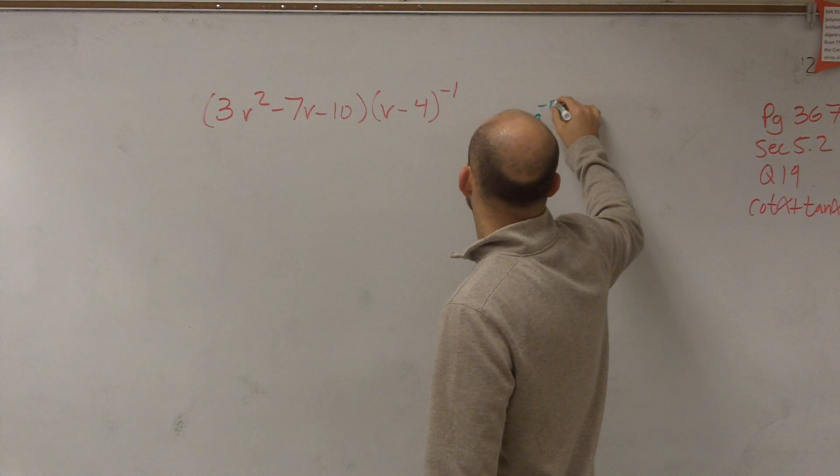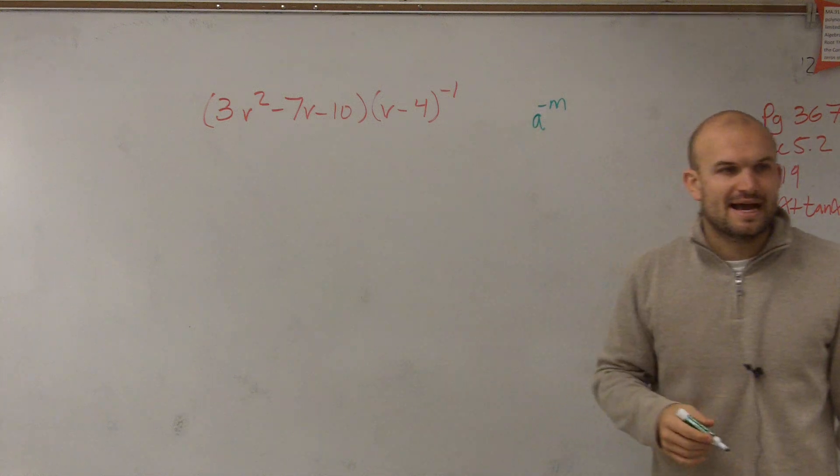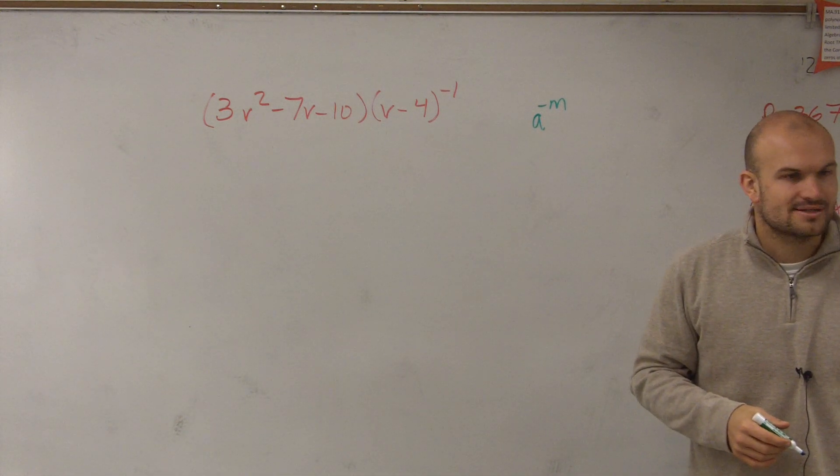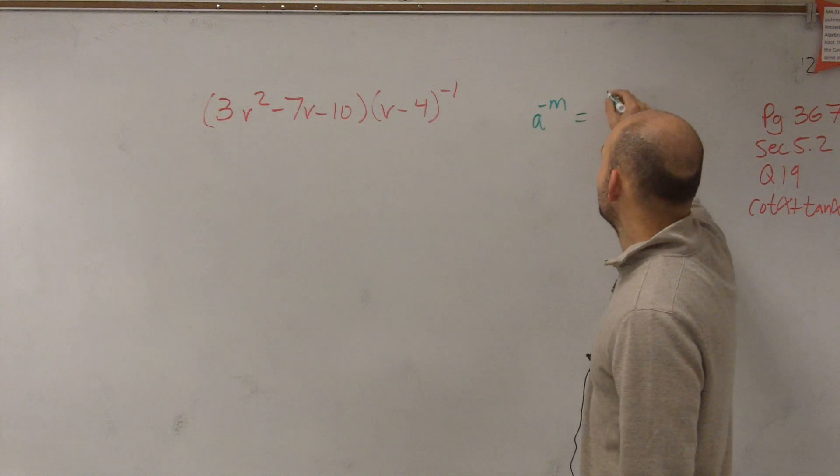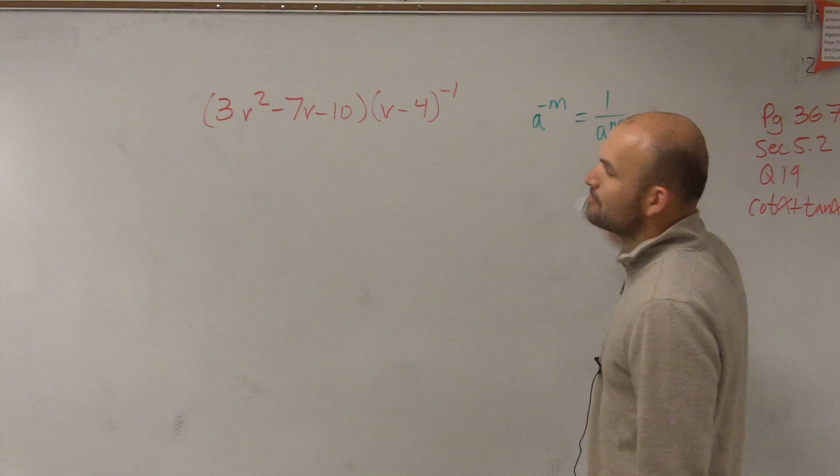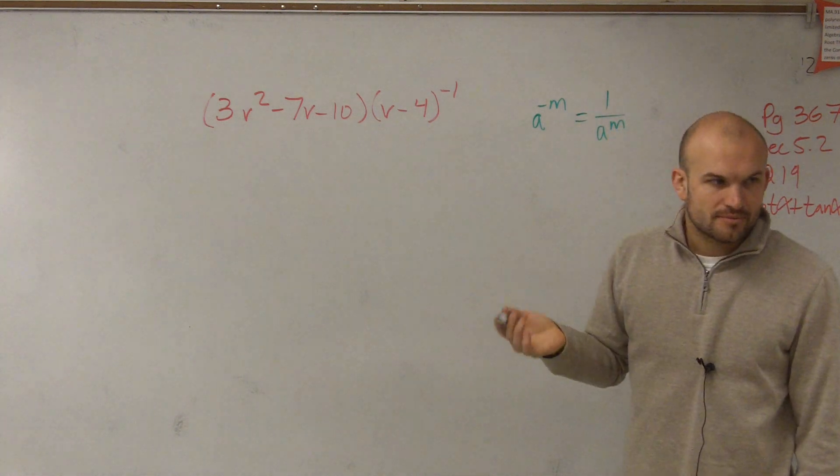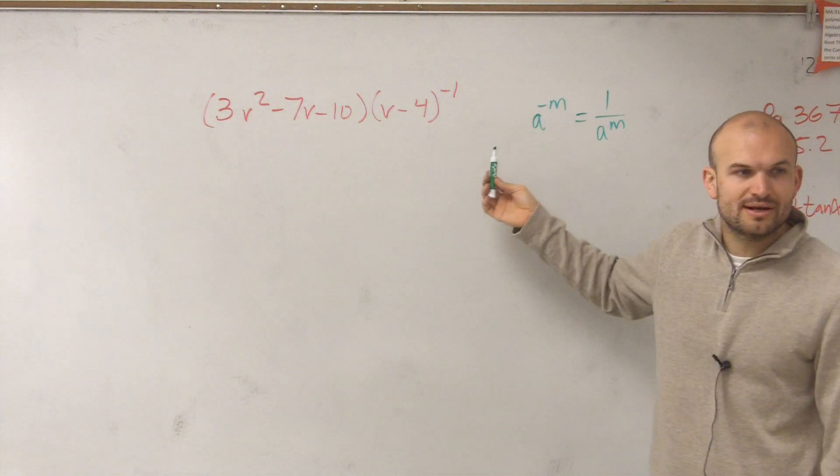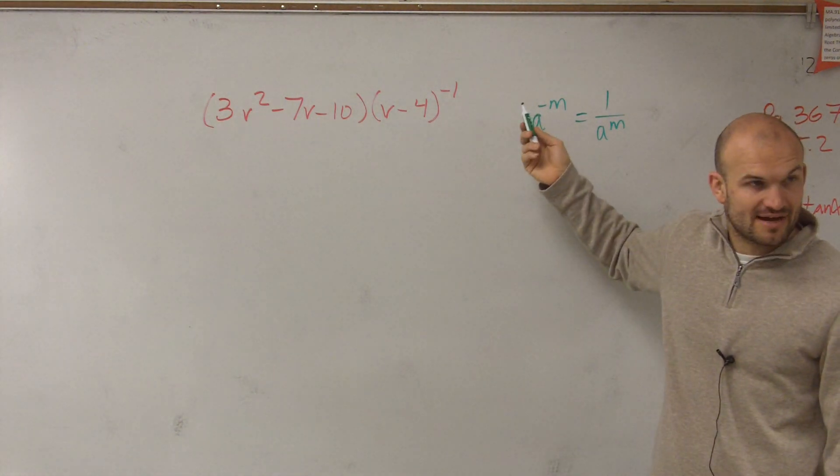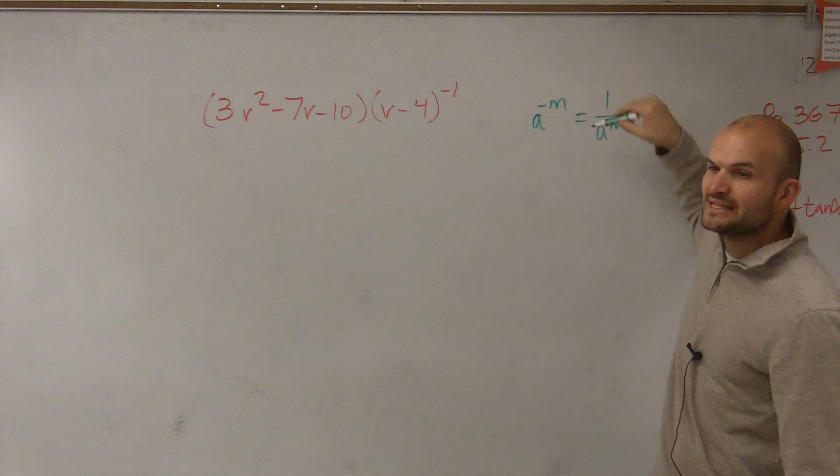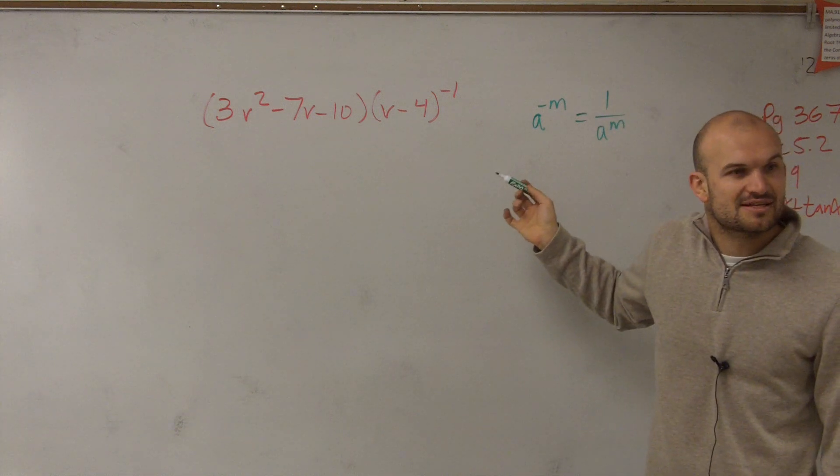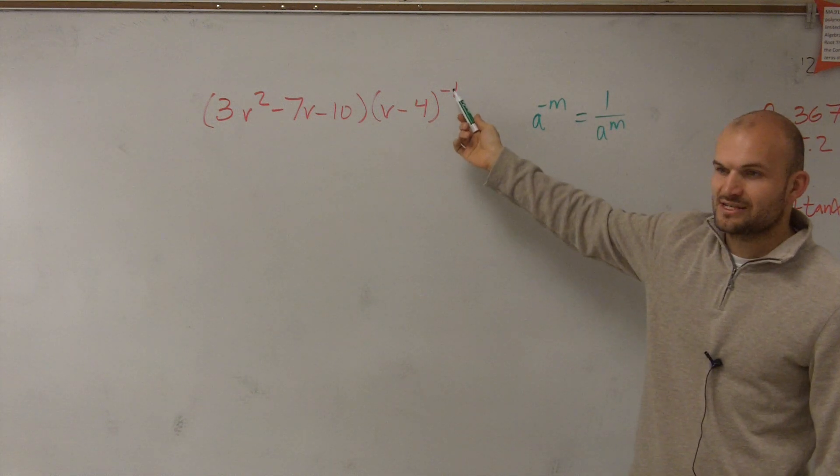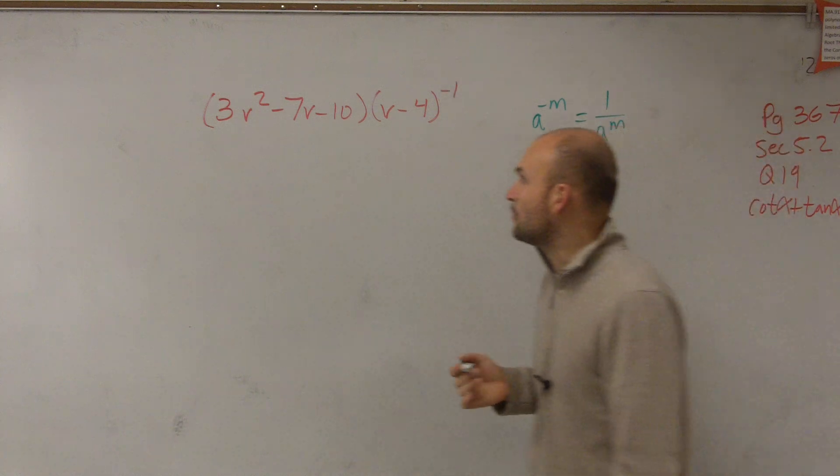you guys need to remember that if I have a to the negative exponent, that is the same thing as 1 over a to the positive exponent. So in hindsight, really all I'm doing is if I multiply something to a negative exponent, that really means you're going to be dividing it to the positive exponent. Well, v minus 4 to the positive exponent is just going to be v minus 4.